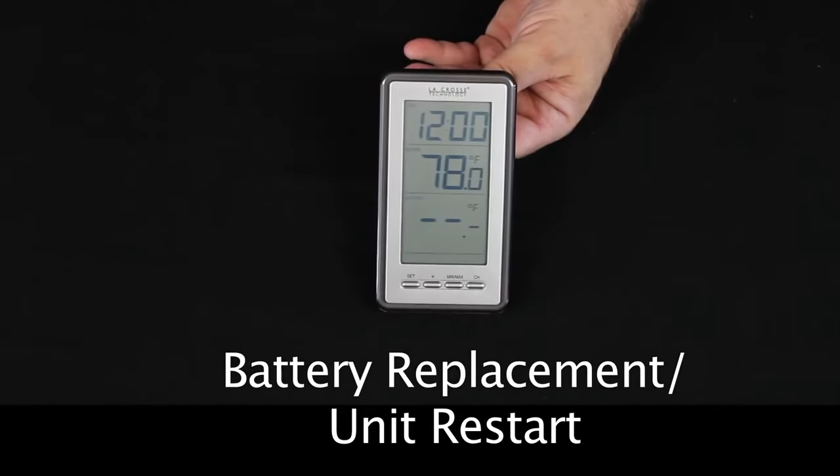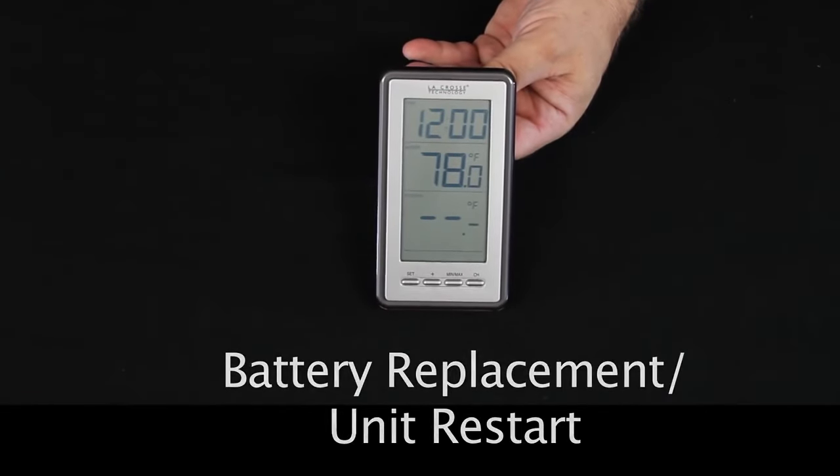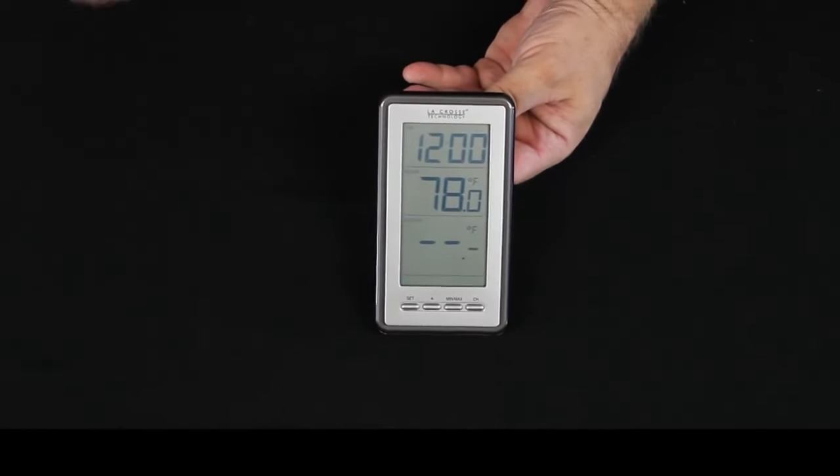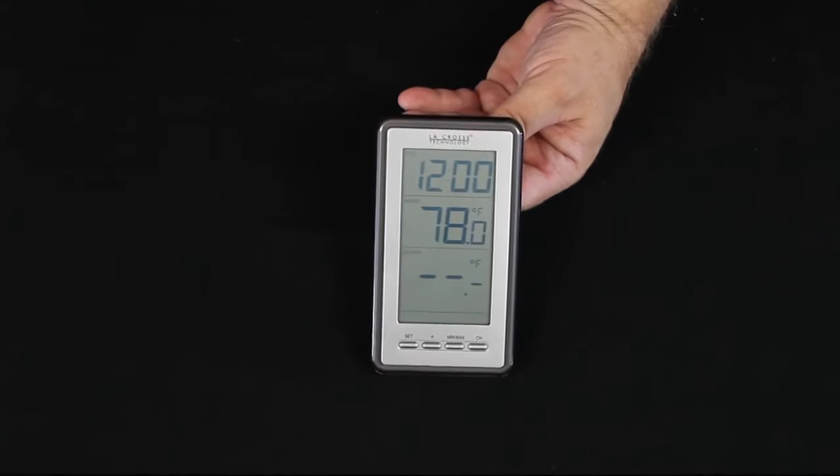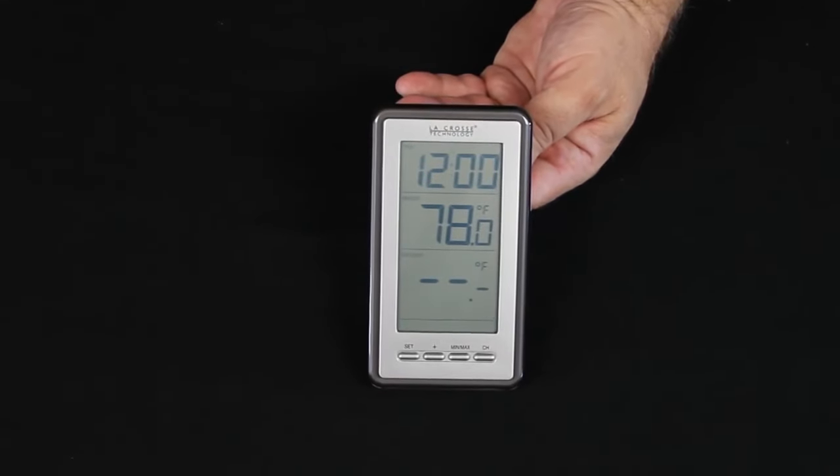About at the end of a year or so which is general life for the batteries in these units you'll see the display show blanks for the outdoor area, the three dashes. What you do then as far as the battery replacement is just a general restart of the unit.